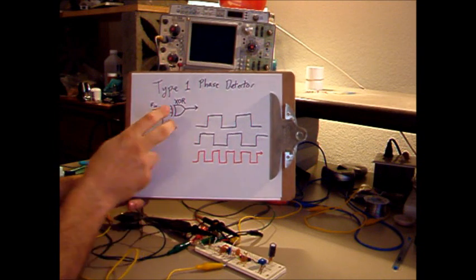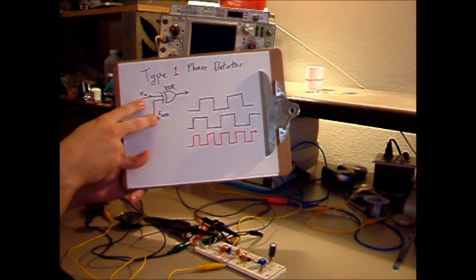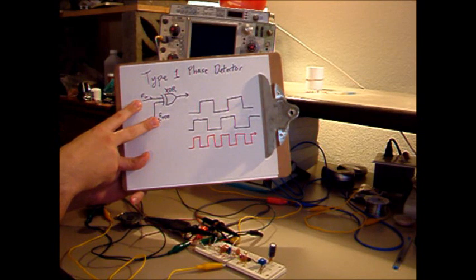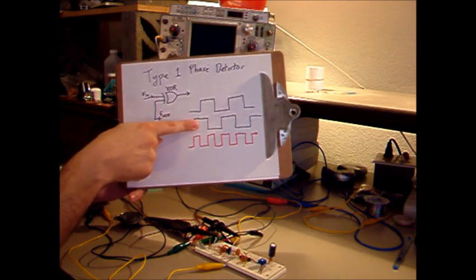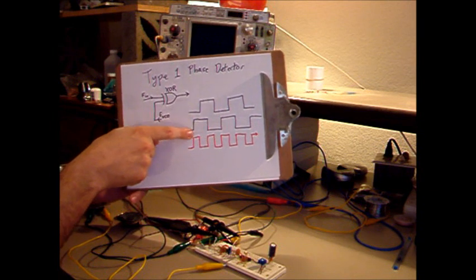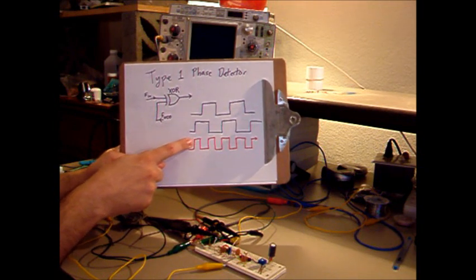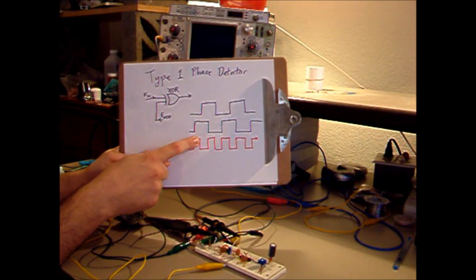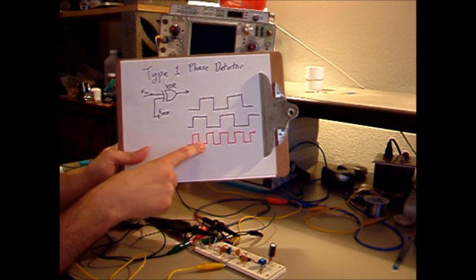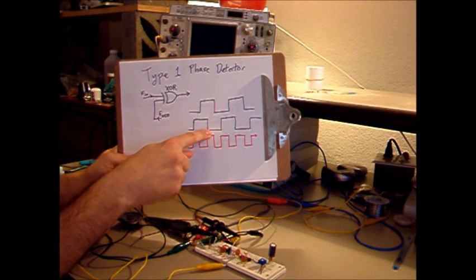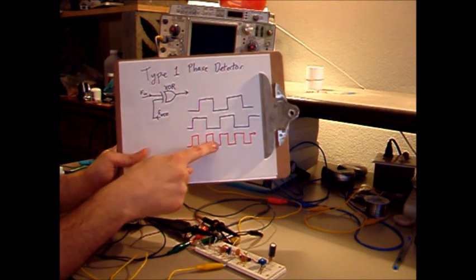Thinking about it digitally, the type 1 phase detector is very analogous to the exclusive OR (XOR) gate. The XOR gate compares two signals and outputs a positive signal when they're different and a zero when they're the same. Given an input signal on top and the VCO signal in the middle, when the VCO frequency goes high early while the input is low, the output goes high — it would start raising the VCO frequency until the input signal goes high. Then they're both high and the error signal goes low. One goes low, so the VCO is low and the input is high, error signal goes high, then the input finally goes low and they're both low and error signal's low.